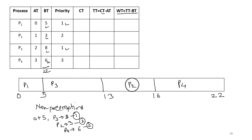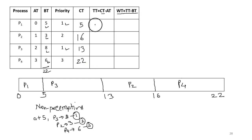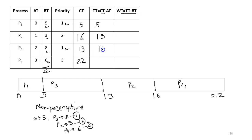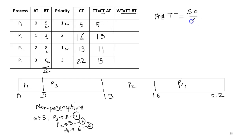From the Gantt chart: P1 completes at 5, P2 completes at 16, P3 completes at 13, and P4 completes at 22. Turnaround time is completion time minus arrival time. Turnaround time for P1 is 5 minus 0 = 5. For P2 it is 16 minus 1 = 15. For P3 it is 13 minus 2 = 11. For P4 it is 22 minus 3 = 19. Average turnaround time is the total divided by the number of processes: 50 divided by 4 equals 12.5 minutes.